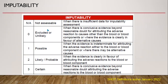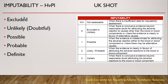The imputability guidelines as per the UK SHOT program include five possible labels: not assessable, excluded or unlikely, possible, probable, and certain. For comparison, the Hemovigilance Program of India also has five labels: excluded, unlikely, doubtful, possible, probable, and definite — which are very similar to the UK system with only minor differences.